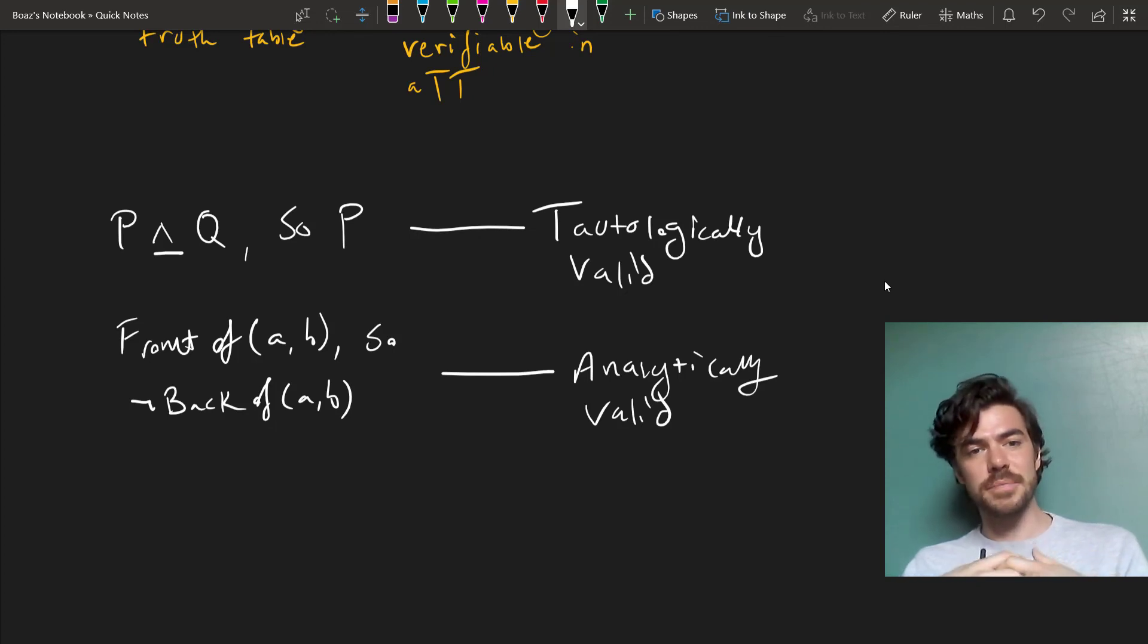Here's a question to end this off with. Granted that not all analytically valid consequences will be tautologically valid, but can a tautologically valid consequence not be analytically valid? I'll post the answer in the description.